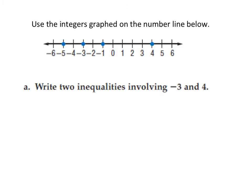On this slide, it says to use the integers graphed on the number line below. We have 0 in the middle. To the left, we have all the negative numbers all the way up to negative 6, and to the right we have all the positive numbers all the way to 6. We do have some blue dots — these blue dots are coordinates, and they represent the numbers negative 5, negative 3, negative 1, and 4.